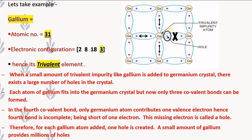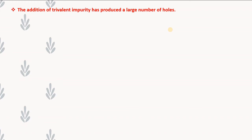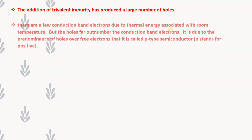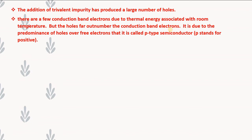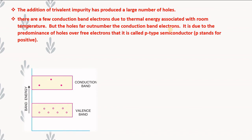Therefore, for each gallium atom added, one hole is created. A small amount of gallium provides millions of holes. The addition of trivalent impurity produces a large number of holes. A few conduction band electrons are generated by thermal energy at room temperature, but the holes far outnumber the conduction band electrons. It is due to the predominance of holes over free electrons that it is called a p-type semiconductor. In the diagram, a large number of holes are present in the valence band but very few electrons are in the conduction band.